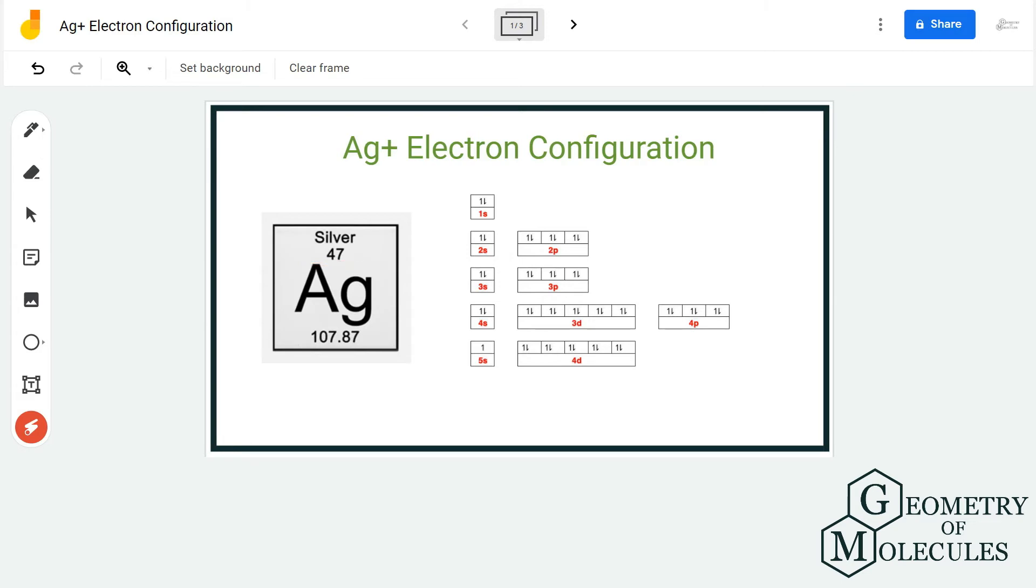Silver has an atomic number of 47, which means it has similar numbers of protons and electrons. As there are 47 electrons for silver, the electron configuration will be 1s2 2s2 2p6 3s2 3p6 3d10 4s2 4p6 4d10 5s1.